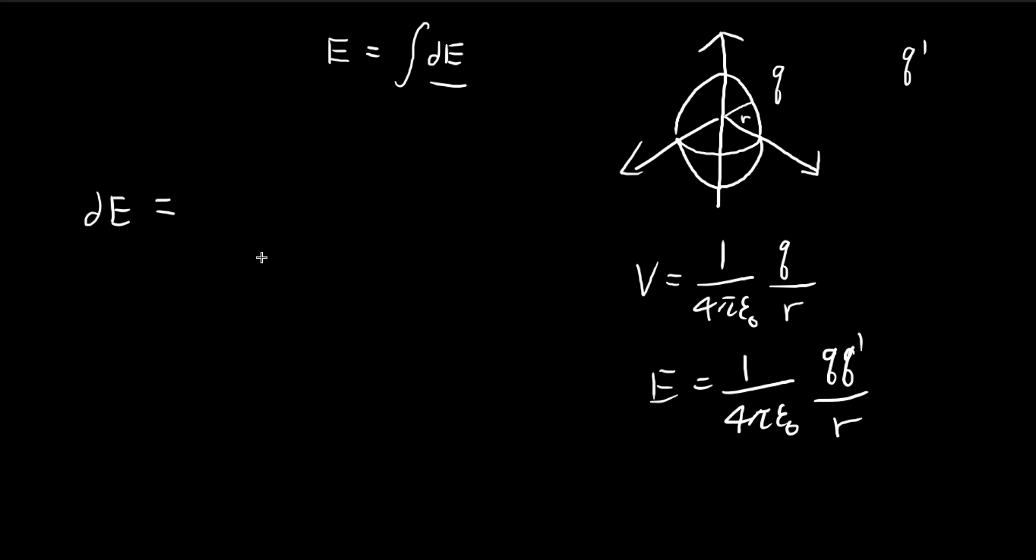So actually, using this, we can compare the corresponding q and q prime, and we can figure out what exactly this dE should be. So q, q is the existing amount of charge. Let's just say we're building a sphere all the way from a radius of zero to a radius of big R. So that's the final size of the sphere that we want.